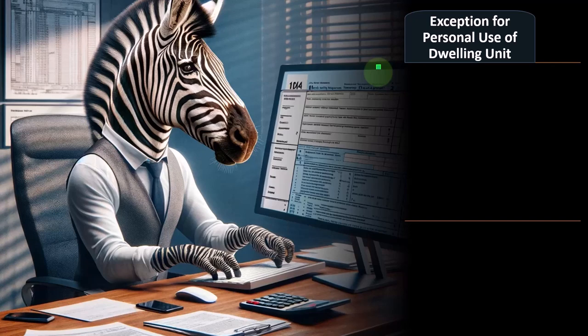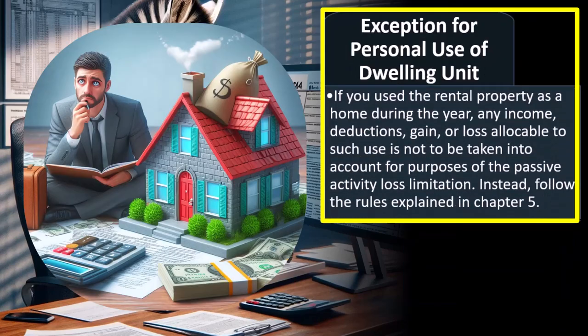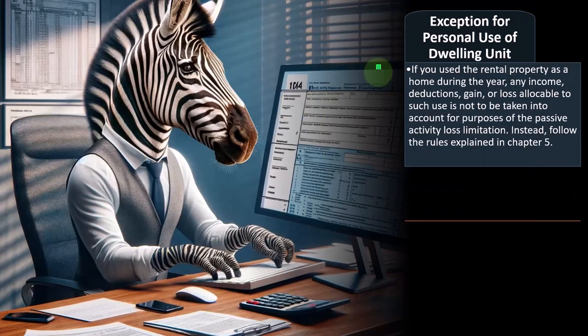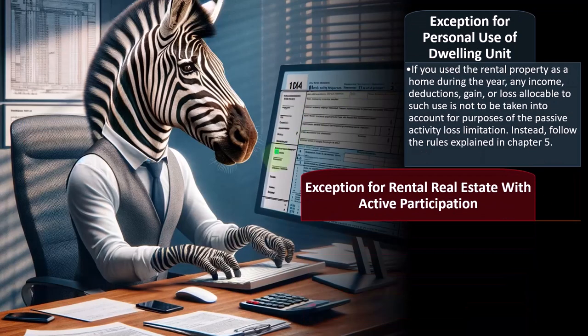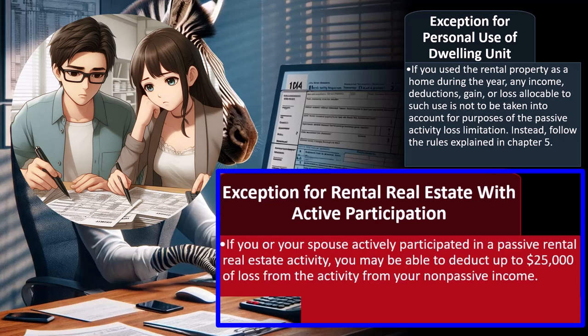Exception for personal use of a dwelling unit: If you use the rental property as a home during the year, any income, deduction, gain, or loss allocable to such use is not taken into account for passive activity loss limitation purposes — follow the rules in Chapter 5. Exception for rental real estate with active participation: If you or your spouse actively participated in a passive rental real estate activity, you may be able to deduct up to $25,000 of loss from the activity from your non-passive income.